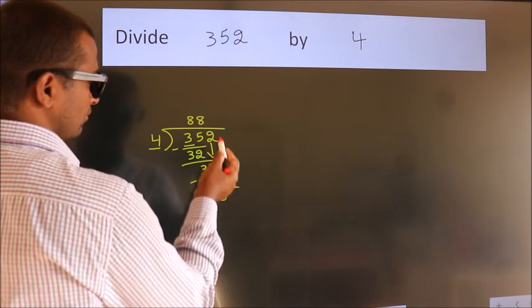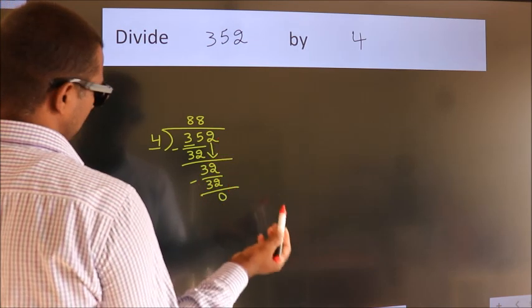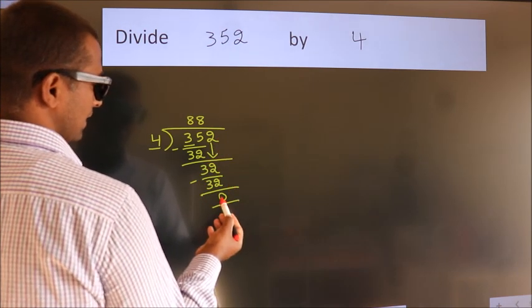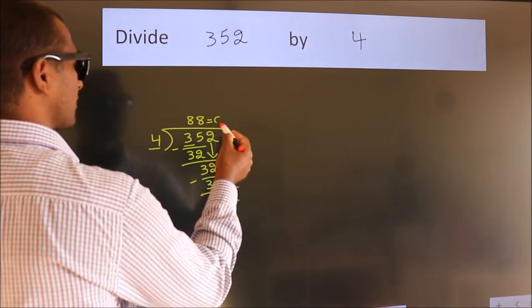After this, no more numbers to bring down. And we got remainder 0. So this is our quotient.